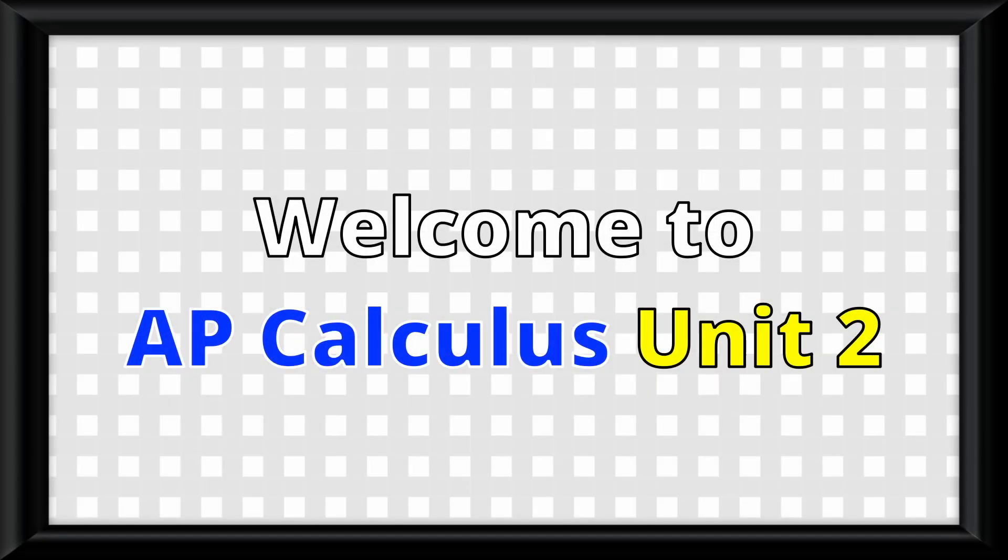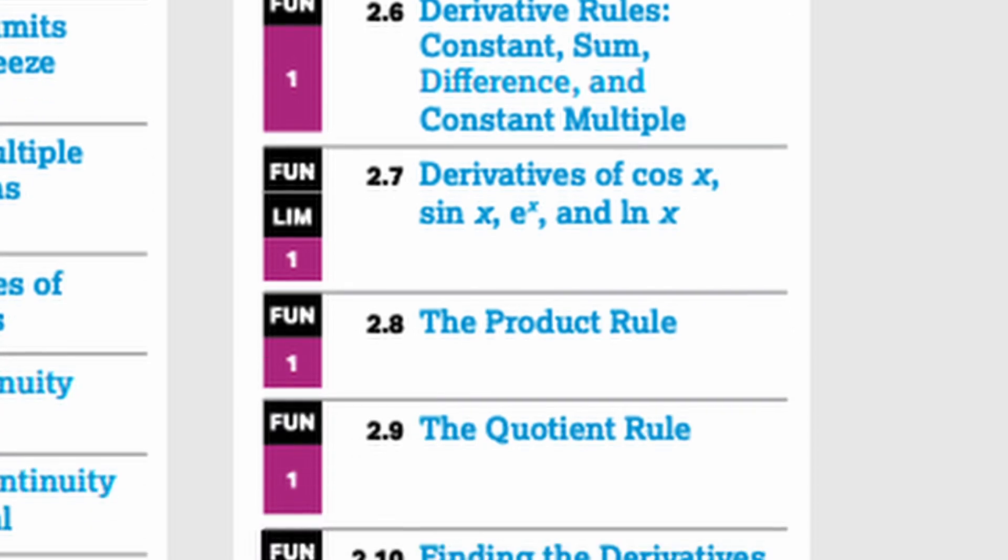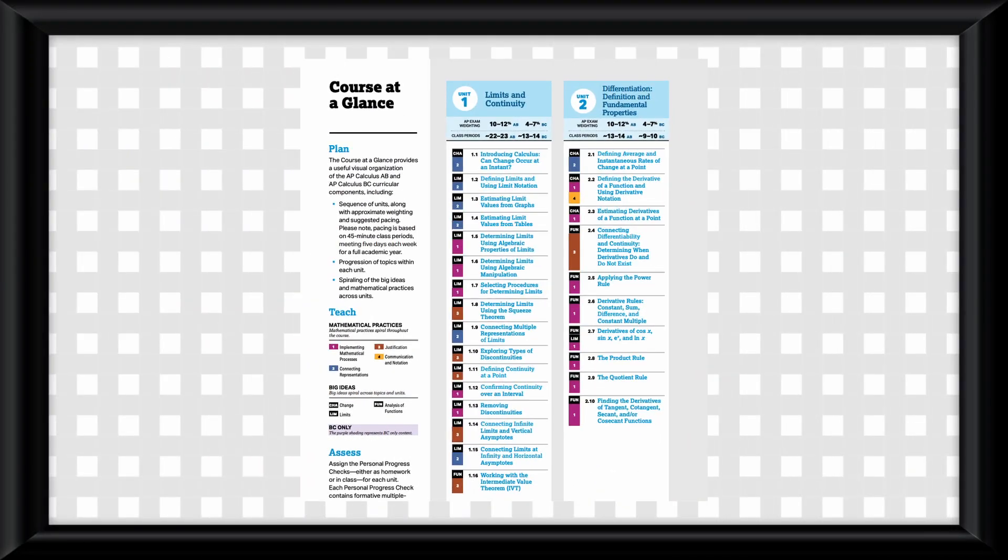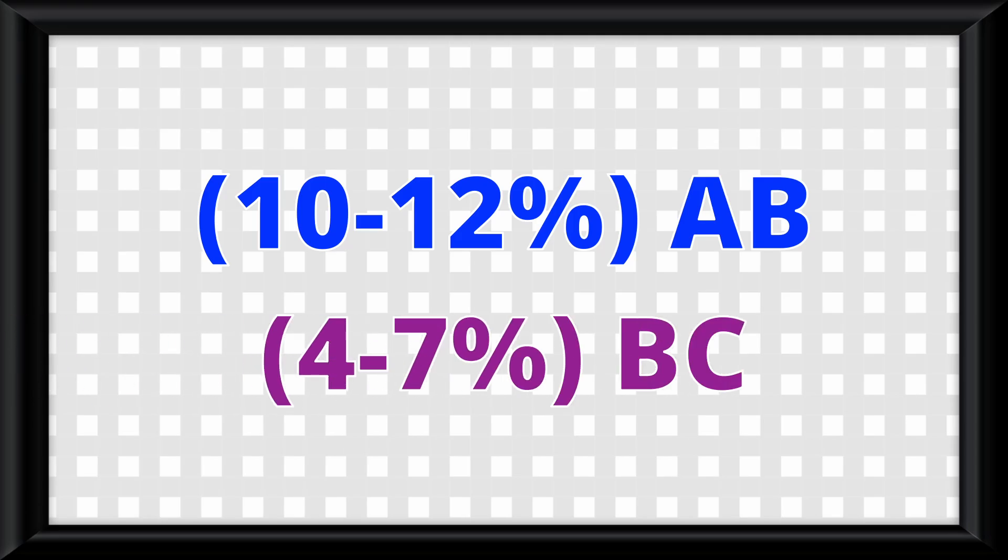Welcome to AP Calculus Unit 2. This unit essentially is all about derivatives, and therefore is pretty long on the surface, when in actuality it really isn't that bad. This unit is worth 10-12% on the AB exam and 4-7% on the BC exam.